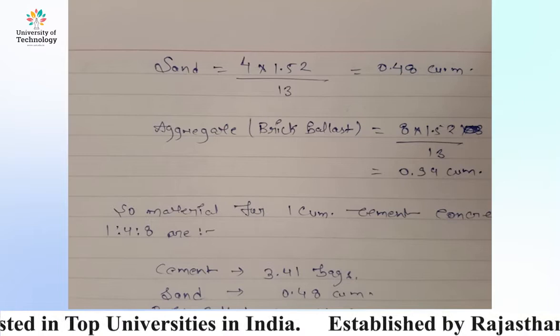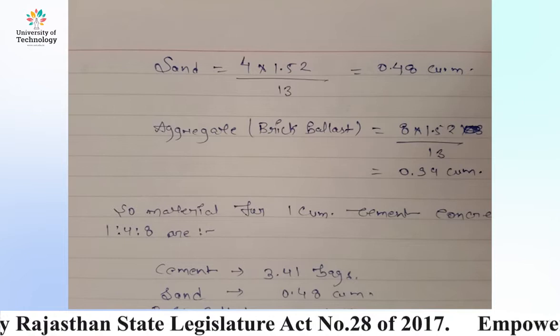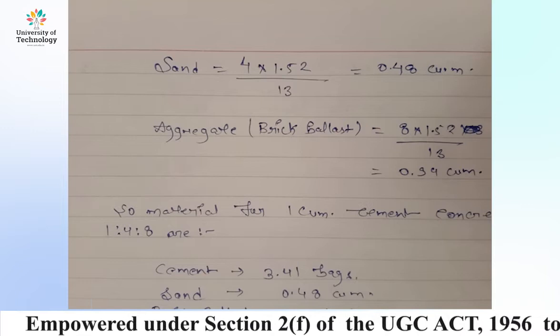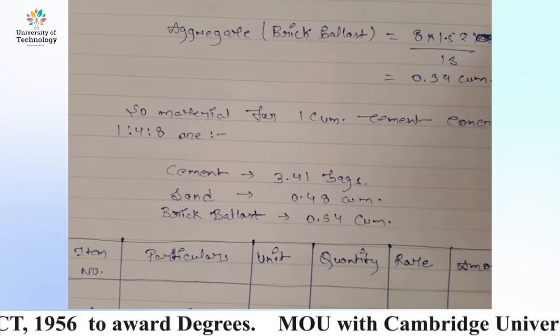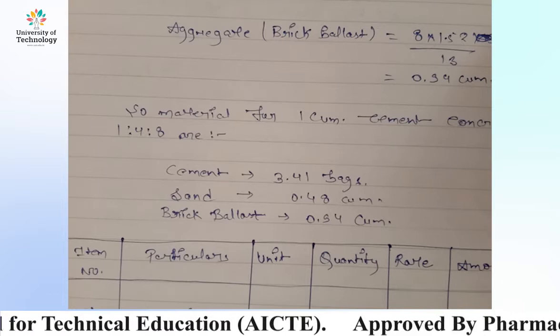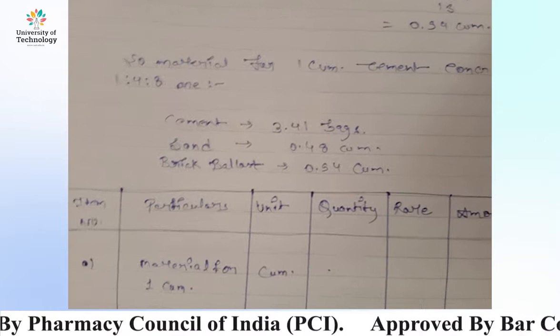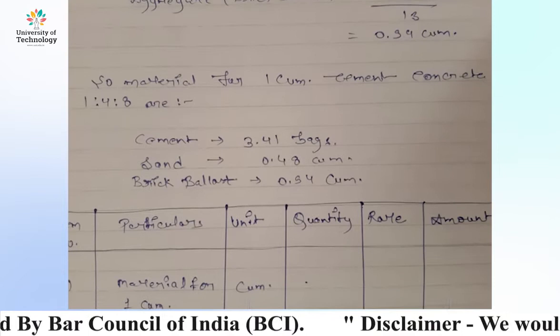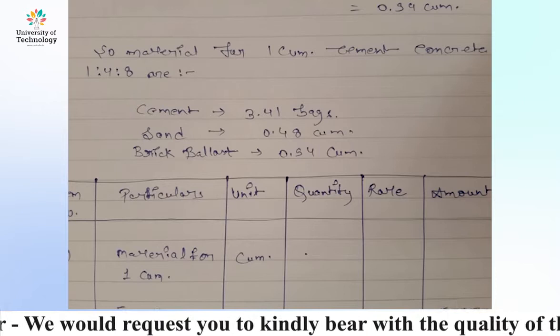Now for sand: 4 multiplied by 1.52, divided by 13, gives 0.48 cubic meters. For aggregate — brick ballast, because we are talking about foundation — 8 multiplied by 1.52, divided by 13, gives 0.94 cubic meters. So material for 1 cubic meter cement concrete 1:4:8 is: cement 3.41 bags, sand 0.48 cubic meters, brick ballast 0.94 cubic meters.